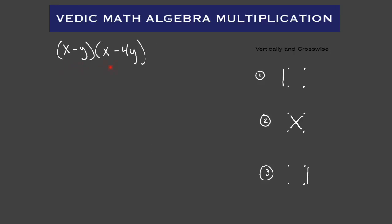Next problem: X minus Y times X minus four Y. We want to set this up vertically — X minus Y multiplied by X minus four Y. Step number one, straight down the left-hand side: X times X gives us X squared. X squared is the first term in our answer.